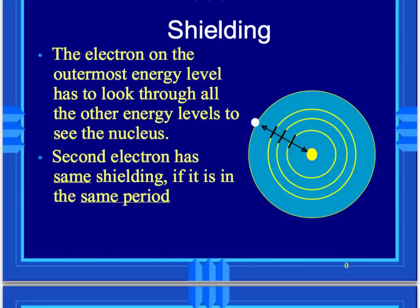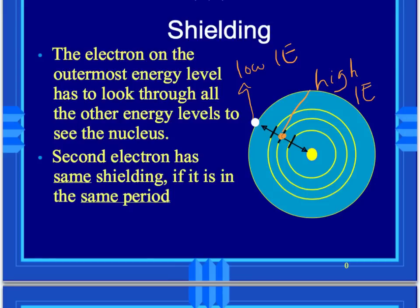Shielding is where an electron on the outermost energy level has to look through all the other energy levels to see the nucleus — that's where the attraction is happening. Due to the Coulombic effect, the further away an electron is from the nucleus, the less ionization energy is required to remove it. An electron in an outer shell will have a lower ionization energy than one closer in, because there's a stronger Coulombic attraction at closer distances.